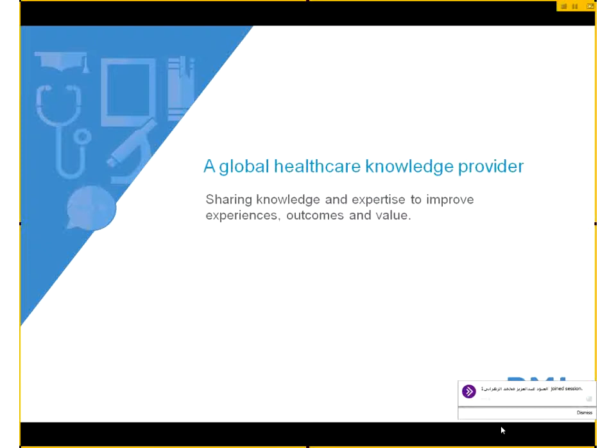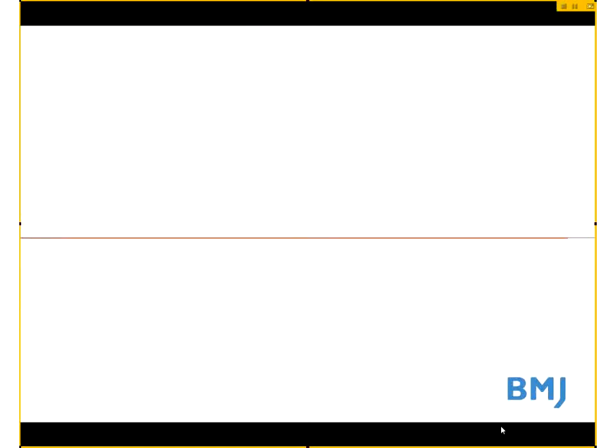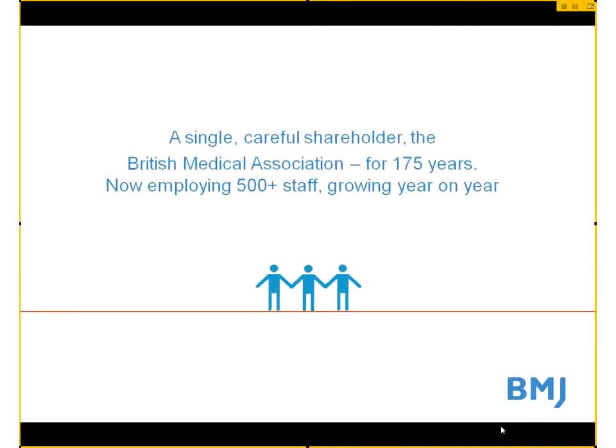So who are we? BMJ is a global healthcare knowledge provider and our mission is to improve healthcare worldwide. We do that by sharing our knowledge and expertise in order to improve experiences, outcomes and value. We're owned by the British Medical Association, we've been going for 175 years and we have customers in almost 230 countries, of course including many of your neighbouring countries.